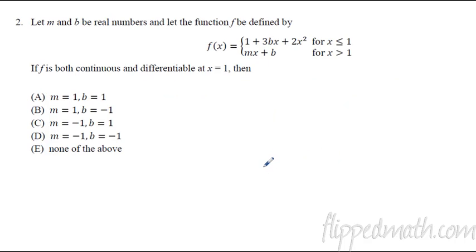Second problem, we saw one of these earlier in unit 3 and these are going to keep coming up. So you want to get really good at them. When you have a continuous function and a differentiable function, they're both, and it's piecewise, what that means is we're just going to take these two pieces and set them equal to each other. So 1 plus 3bx plus 2x squared has to equal mx plus b. Now when do they equal each other? The pieces are coming together right here at x equals 1.